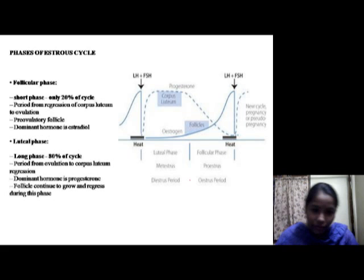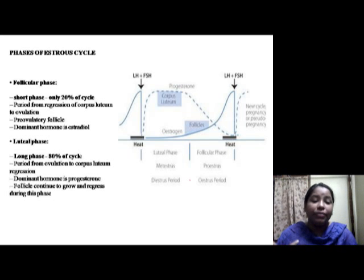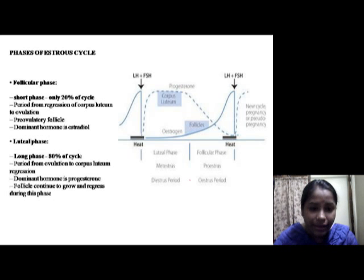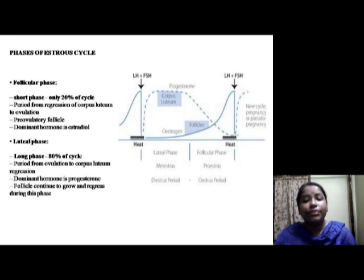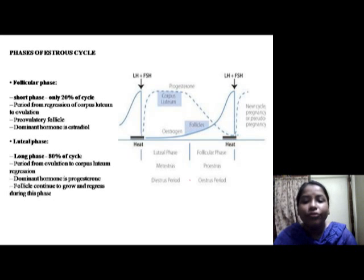The luteal phase begins at ovulation and ends during luteolysis. Following ovulation, the ovulated follicles undergo transformation called luteinization to become the corpus luteum. During the luteal phase, the corpus luteum secretes progesterone, which is the dominant hormone of this phase.